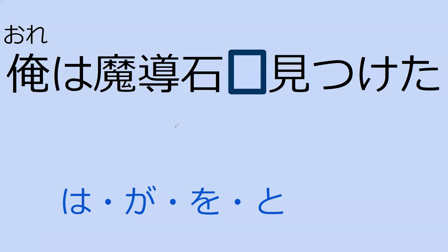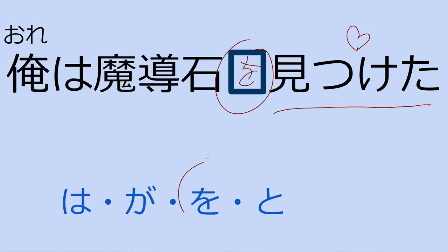So if I was saying 'I found a magical stone' using mitsuketa, what particle would we use? Is mitsukeru a direct-action verb? Yes, it is, so it's wo. 'Ore wa majo saki wo mitsuketa.' Yep, we use wo for that. Perfect.